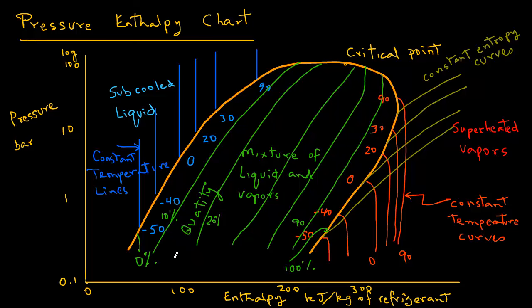On the saturated vapor curve when it says 100% that means it is 100% vapor. Quality is also sometimes called dryness fraction. You will see that name also given to quality in some problems.